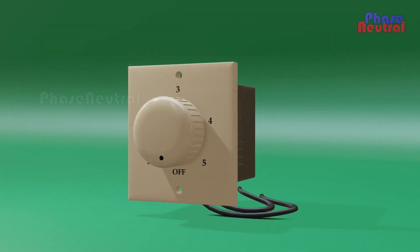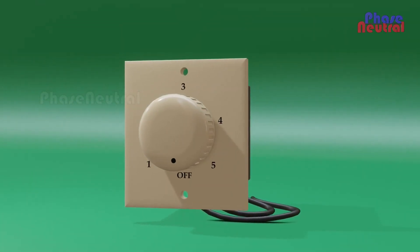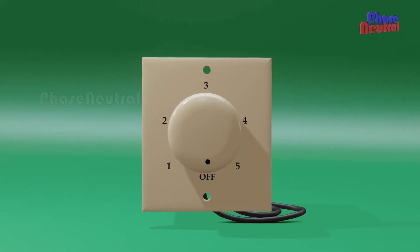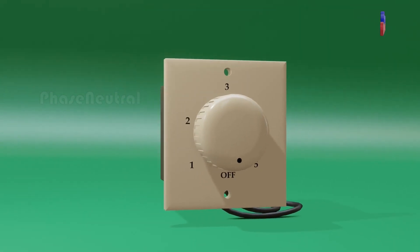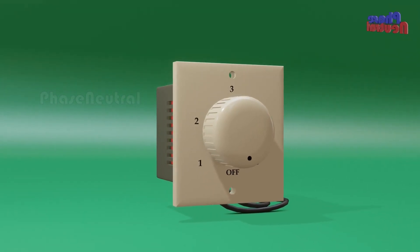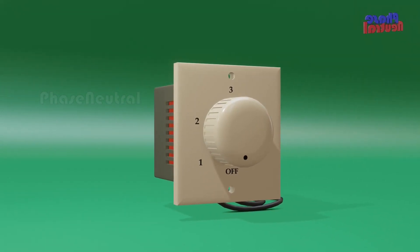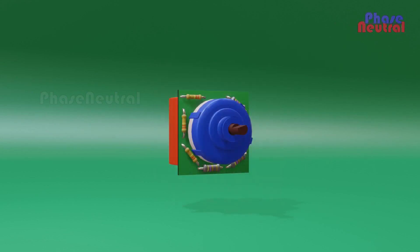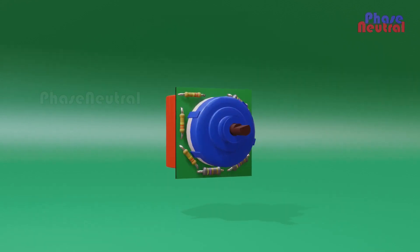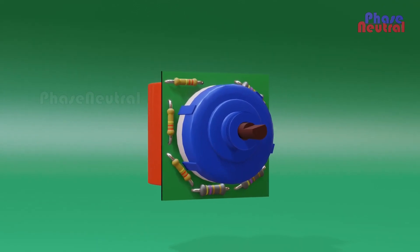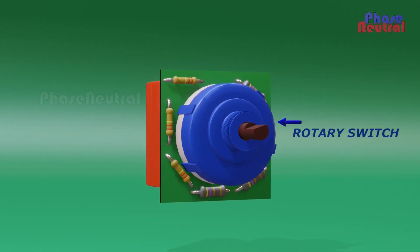The working of a step type electronic fan regulator is a little similar to an electric fan regulator. You can control the speed of the fan step by step. The inside parts of a step type electronic fan regulator are a rotary switch, capacitors, and resistors.